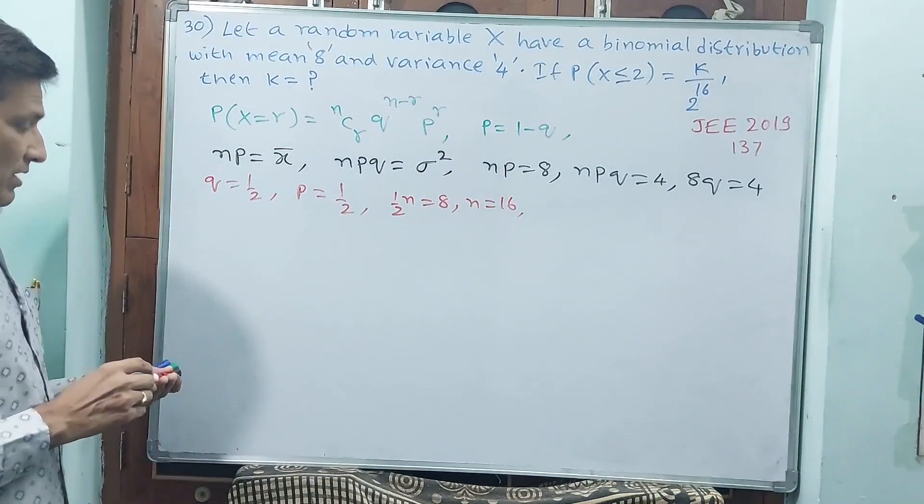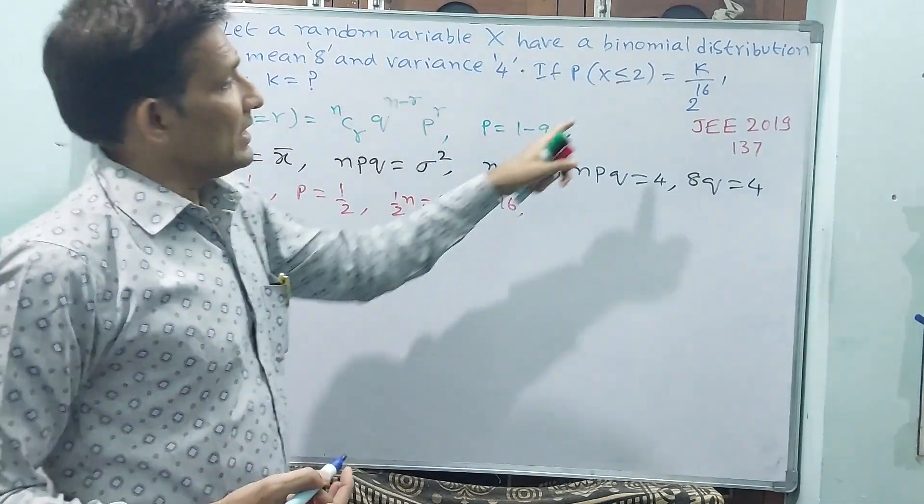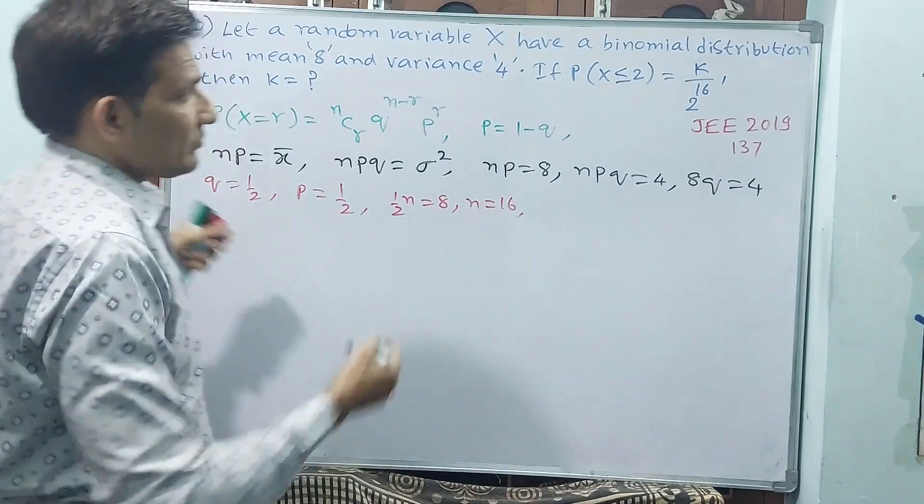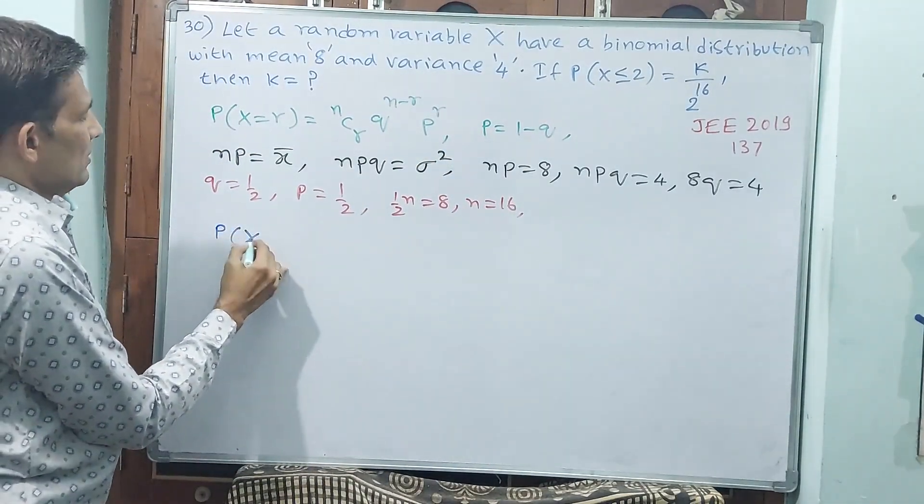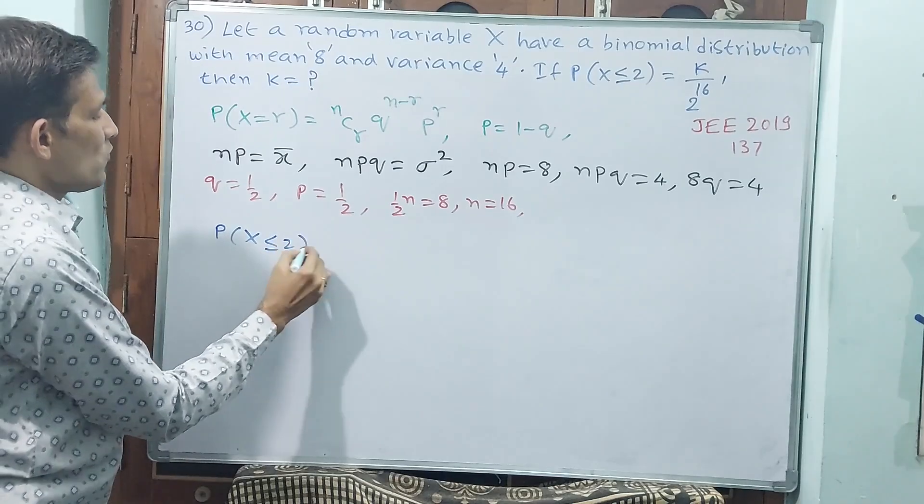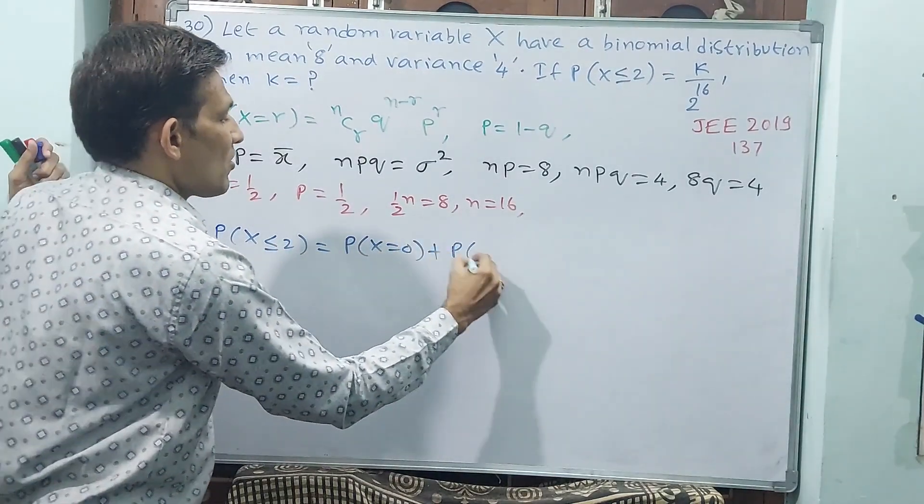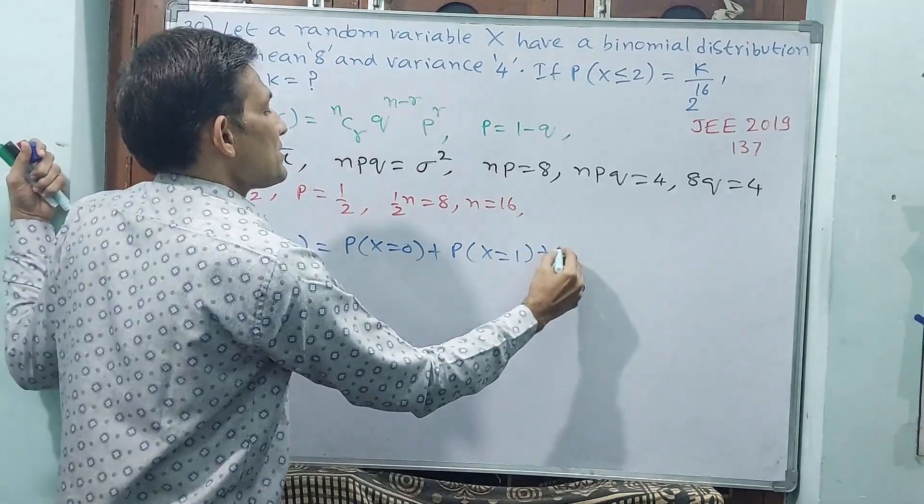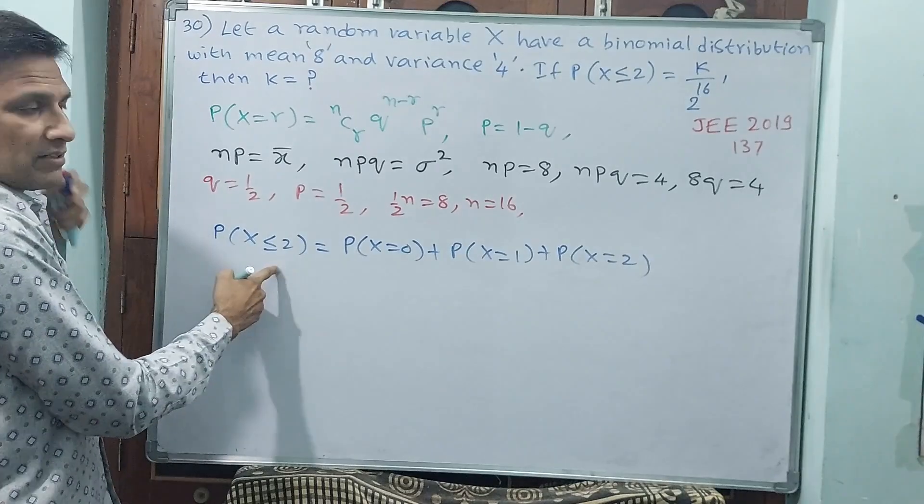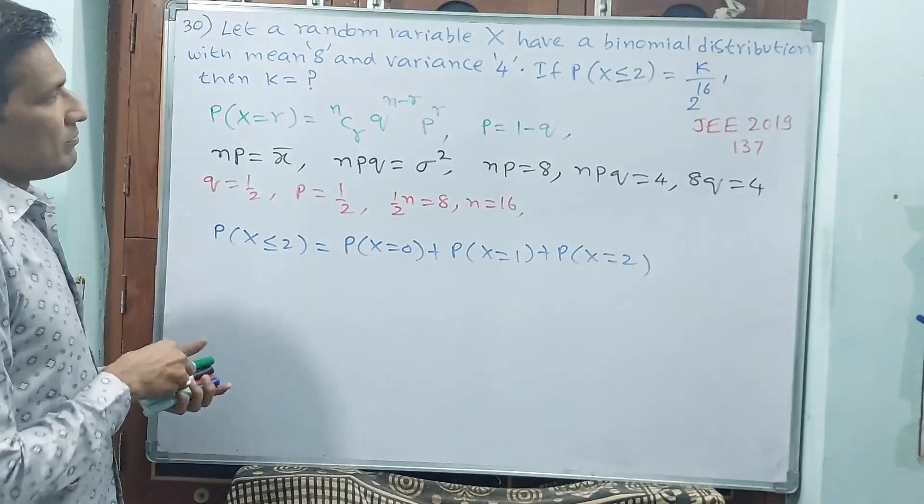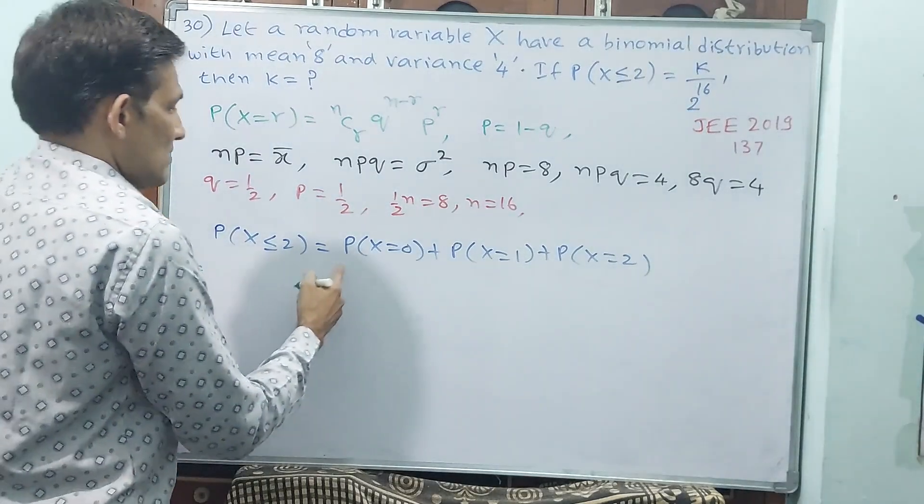Now let us write this formula. I will rewrite. Why I am rewriting? Because r is not just 1 here, different r values will come. See how I am rewriting: P(X≤2) = P(X=0) + P(X=1) + P(X=2). Why? Because less than or equal to 2 is there. Up to there we have to go.